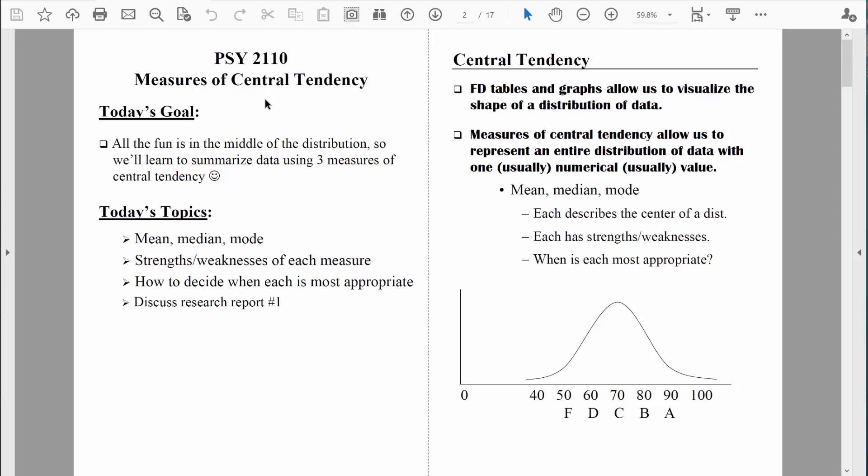Welcome back, everybody. Let's continue to talk about central tendency. Remember, when it comes to central tendency, there are three primary measures: the mean, the median, and the mode. Each one is trying to describe the center of the distribution, where most of the data lies. Each measure has its strengths and weaknesses, and we want to make sure we understand when each one is most appropriate.